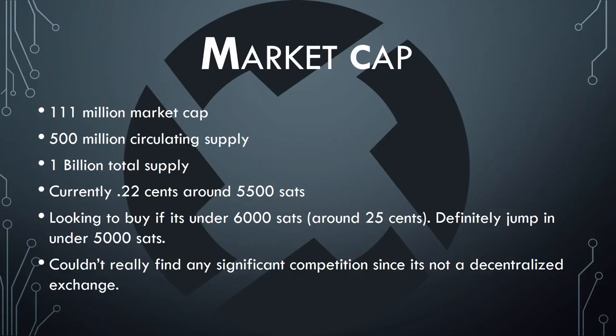The market cap for 0x is around 100 to 110 million right now. They have a 500 million circulating supply and 1 billion total supply — not super amazing, but market cap is more important to me than supply. Currently they're trading around 22 cents, around 5,500 sats. I'm looking to buy under 6,000 sats — around 25 cents — and I'll definitely jump in if it hits 5,000 sats. I couldn't find any significant competition since it's not a decentralized exchange. Everyone keeps comparing them to Kyber Network, but they're not a decentralized exchange — they're a protocol.